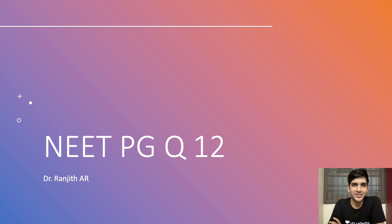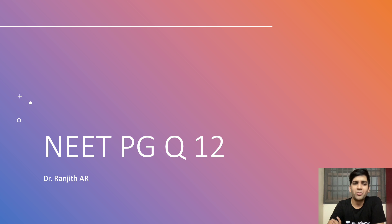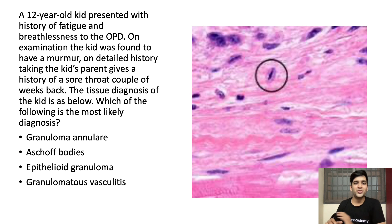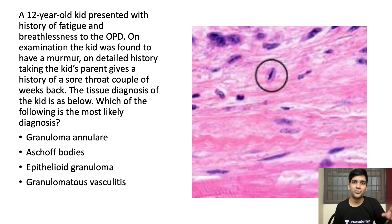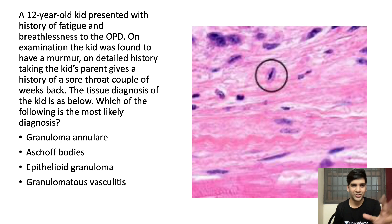This is a very simple question. I am sure that almost everyone who attended the NEET PG exam would have answered this, because it is one of the most — or maybe the only — microscopy you are aware of in systemic pathology: your Aschoff bodies. From second year onwards, we know this cell — caterpillar nuclei. I was told this was the image given, and some students said it was the original Aschoff body from Robbins. Either way, from second year, one slide you should be confident about is your Aschoff bodies.